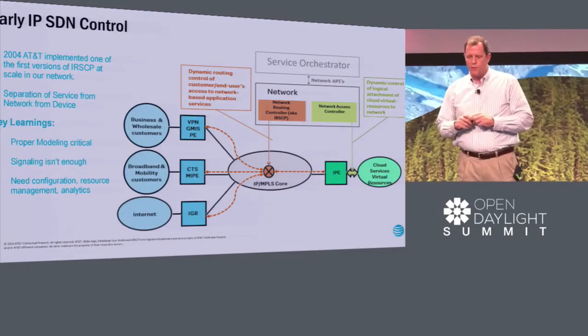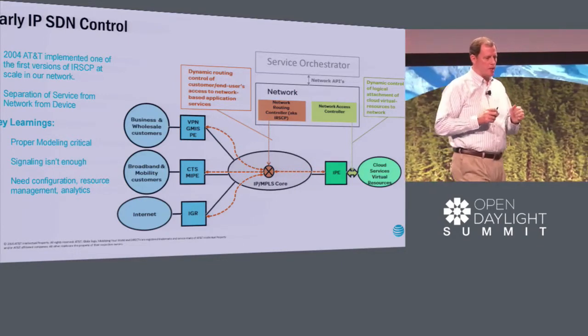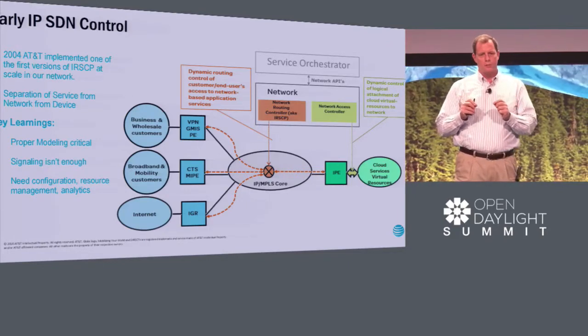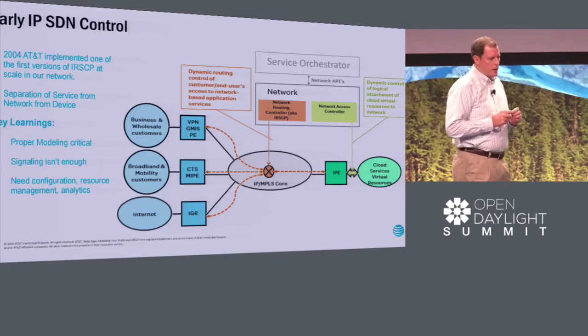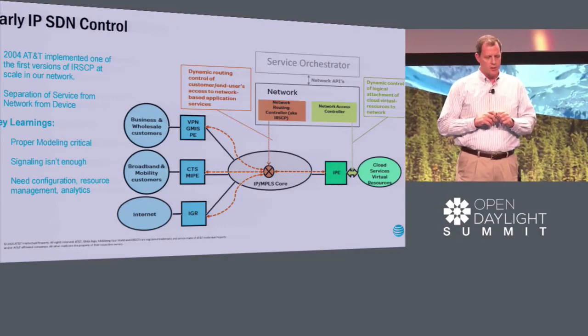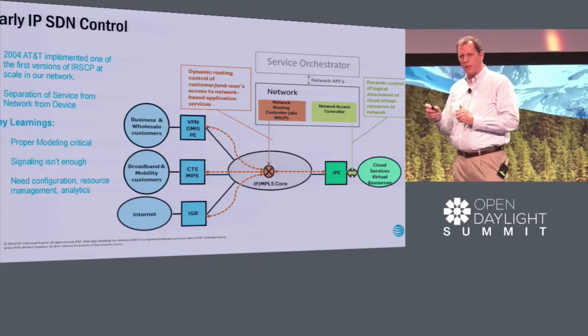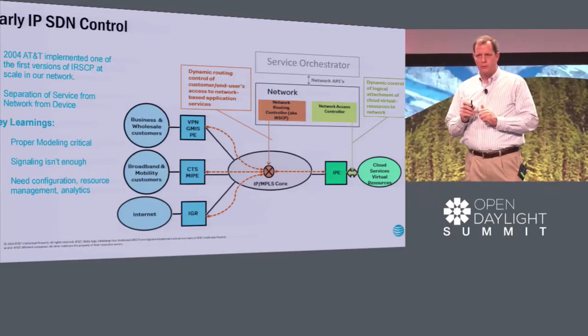With that early knowledge from IRSCP, we said what we'd really like to do is to be able to separate the service from the network from the device it runs on — that's our goal. When we put IRSCP in our network at scale, we had some key learnings: proper modeling is critical, that abstraction layer is very important. And signaling, while necessary, is not sufficient — you have to think about things like configuration, resource management, and analytics.